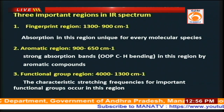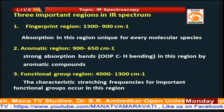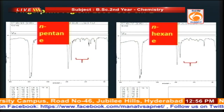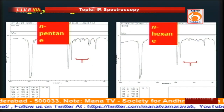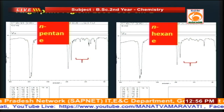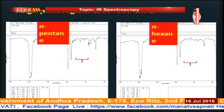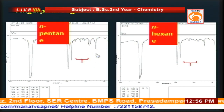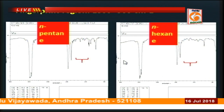There are three important regions in the IR spectrum: the fingerprint region, the aromatic region, and the functional group region. In the fingerprint region, no two different molecules give the same absorption pattern. As shown in the diagram, n-pentane (C₅H₁₂) and n-hexane (C₆H₁₄) differ by only a CH₂ group, but in the fingerprint region there is a difference in the absorption pattern, whereas in the other regions the absorption pattern is almost the same. Therefore by concentrating on this region we can determine whether two compounds giving different spectra are actually different.